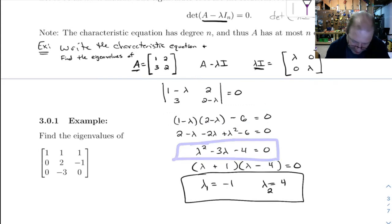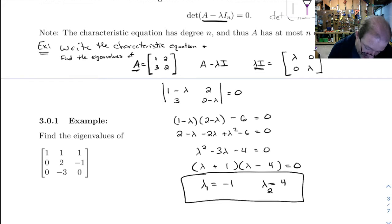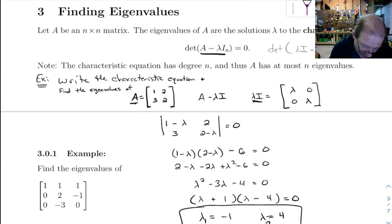Well, all of these are the characteristic equation. But notice a 2 by 2 matrix has a quadratic characteristic equation. A 3 by 3 matrix is going to have a third degree characteristic equation and so on. And so this note up here comes into play. The characteristic equation has degree n and thus A has at most n eigenvalues. Now it's at most because you might have a repeated root of your characteristic equation.